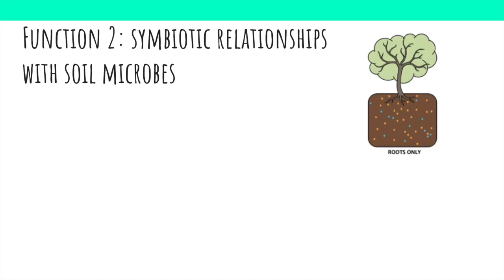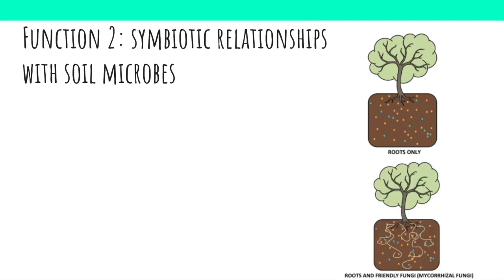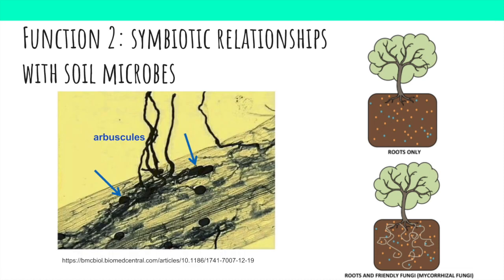Experiments have shown that strigolactones from plants cause increased growth in the hyphae of symbiotic fungi. Hyphae are root-like projections formed by fungus that help it absorb nutrients, and they significantly increase the amount of nutrients the plant can reach. Scientists have observed this process under microscopes. This is an image of a plant root with the symbiotic fungus — the fungus forms a structure called an arbuscule, shown by the blue arrows inside the plant's root cells, which allow the fungus and plant to exchange nutrients. Scientists don't yet know the specifics of how strigolactones promote symbiotic relationships, but they think strigolactones produced by a plant's roots help attract the fungi.